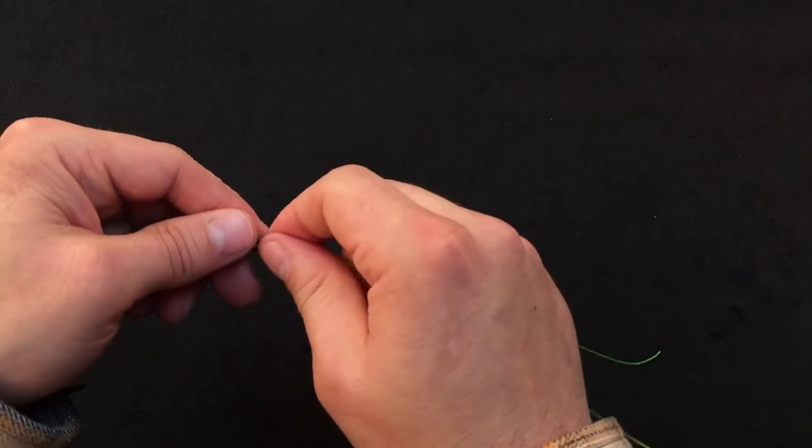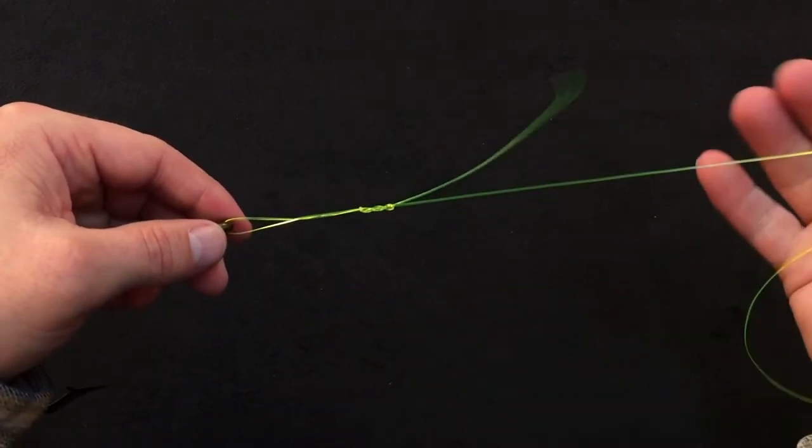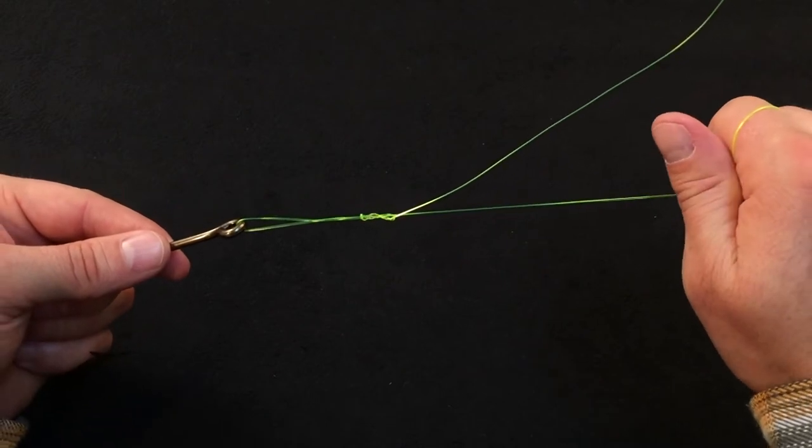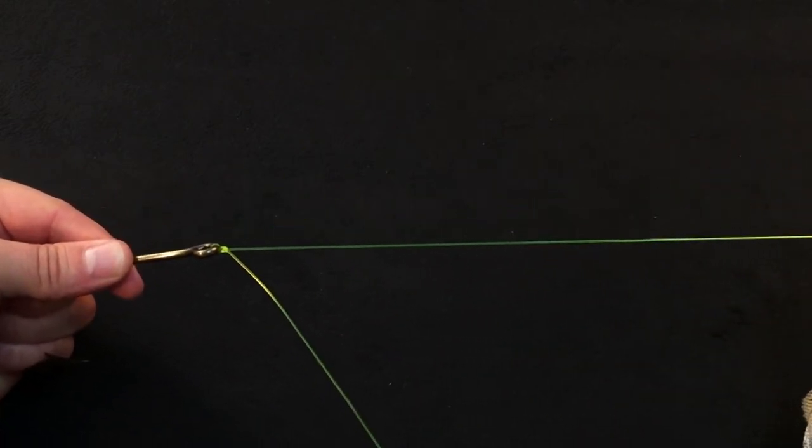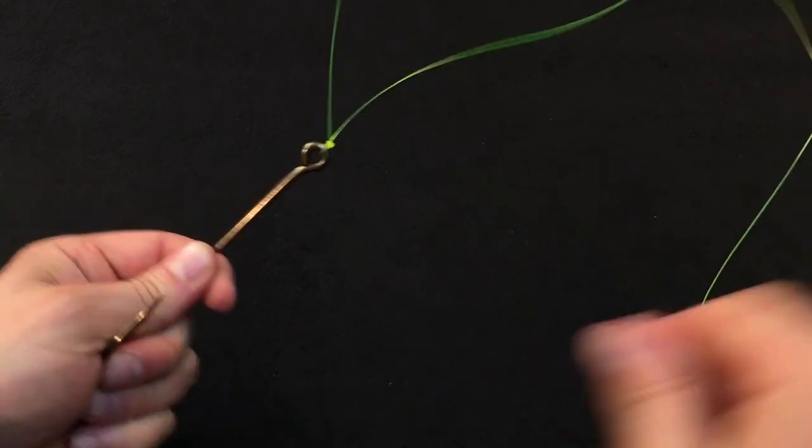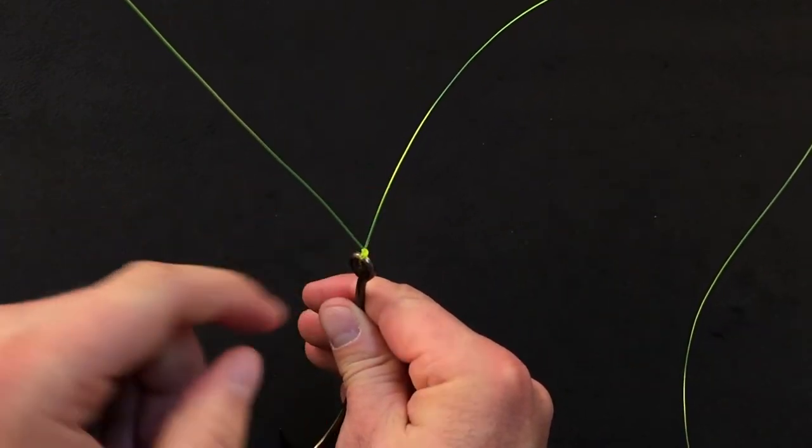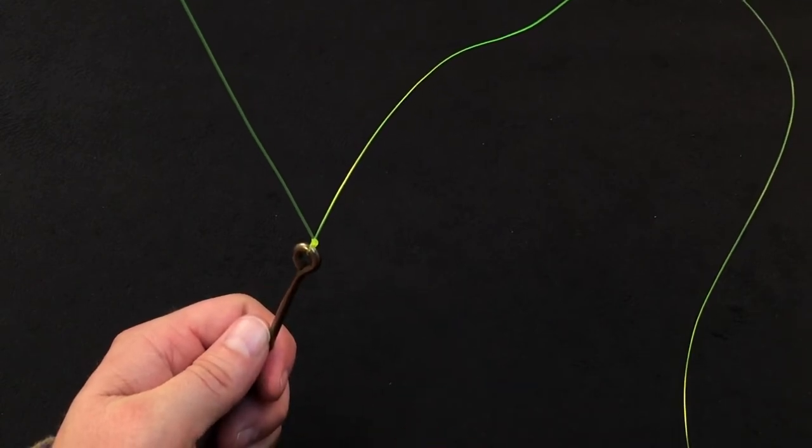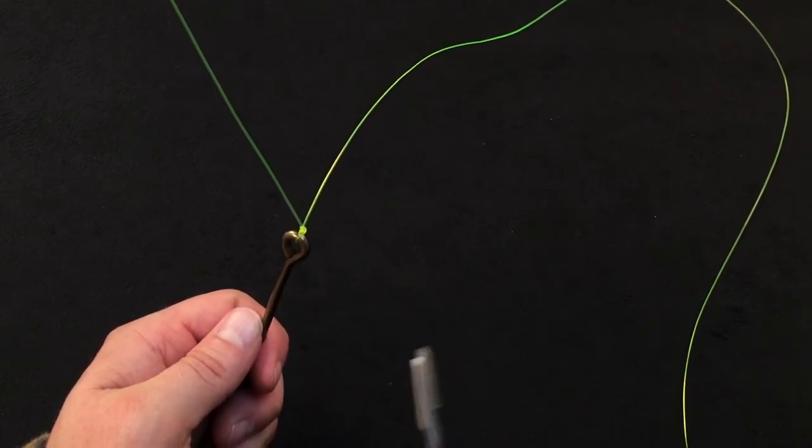Then I take and lubricate the main line with some saliva all the way down to the knot. And take and get a good hold of your leader line. Draw that all the way tight and you'll know that knot's seated when you've got a very nice distinct V. And on smaller tippet material, you're going to have a little audible pop when that knot seats into position.